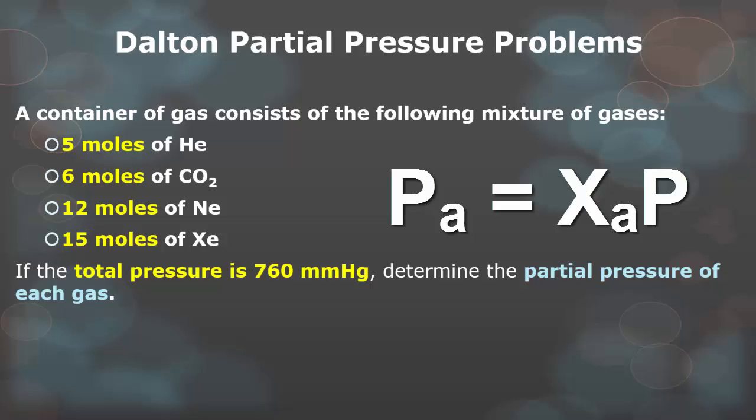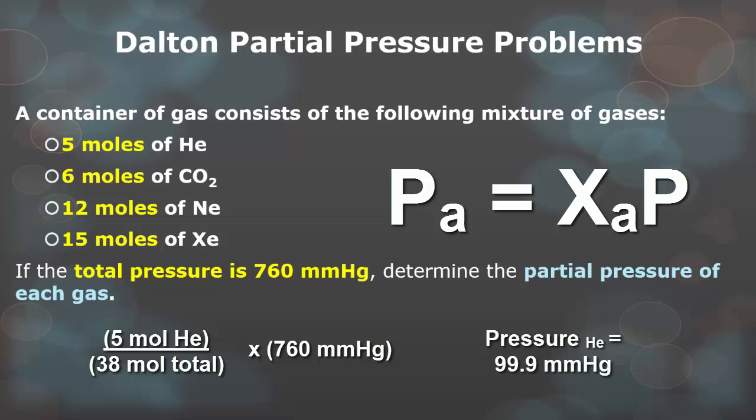We're going to add 5 moles, 6 moles, 12 moles, 15 moles, and we're going to get 38 moles. So your total amount of moles is 38. Now, how do I find the mole ratio of helium? You're now going to take the mole ratio, which is the amount of helium divided by the total amount of all the moles. So you're going to do 5 divided by 38. And that number, when you do that, 5 divided by 38, you're then multiplying it by 760, and that tells you the pressure of just helium. So 5 over 38 multiplied by 760, you should get a partial pressure of 99.9, or 100 millimeters of mercury. That is how much pressure 5 moles of helium is exerting in this one container.